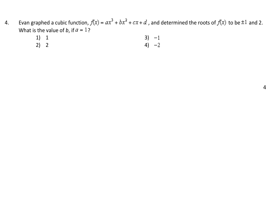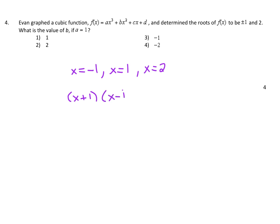Number 4: Evan graphed a cubic function and determined the roots to be negative 1, positive 1, and positive 2. What is the value of b if a equals 1? If we know the roots are at negative 1, positive 1, and positive 2, then our factors would have to be x plus 1, x minus 1, and x minus 2. By giving us the roots or zeros, that leads us to our factors. They say the value of a is 1, so the leading coefficient is 1. So we write f of x equals 1 times those three factors, and we'll multiply it all out and rewrite it in standard form to find what b equals.